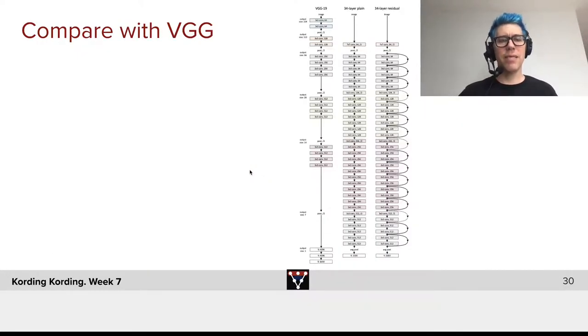Here comes the idea of ResNets. Look at what we have on the left-hand side. We have VGG. It starts with convolution, max pools, convolution, max pools, convolutions, max pools, and so forth.